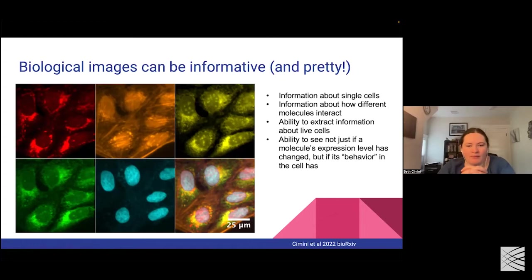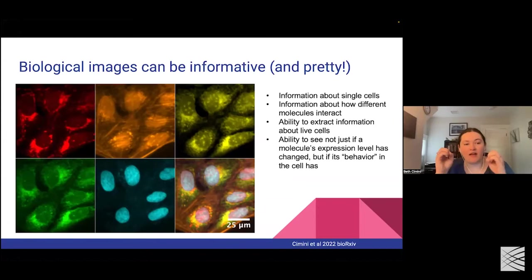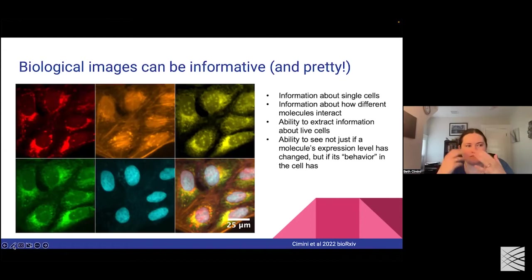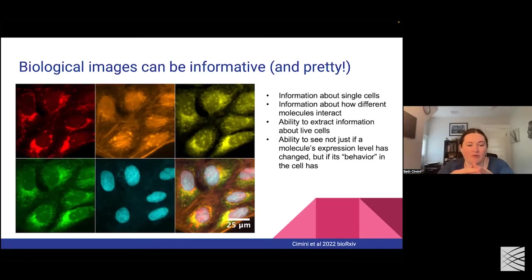People think of microscopy images a lot of times as representative images shown, which was the way microscopy images were used for the vast majority of the history of microscopy. You stained your cells with the things that you cared about, took a picture, and hoped that it was representative. But imaging offers a few sets of advantages that together are pretty unique: we get single cell information, real time information, information about heterogeneity, and we can see how molecules are interacting with each other.